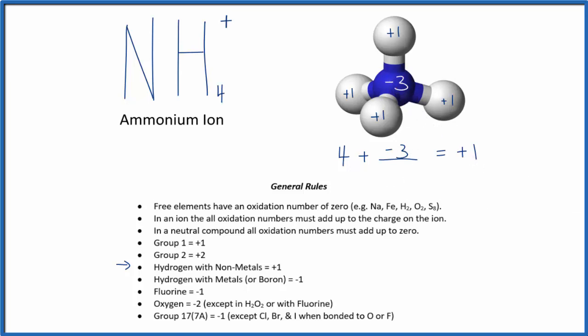To recap, we know from these rules that hydrogen will have an oxidation number of +1. So all these hydrogens and the central nitrogen, if we add all that together, it has to equal +1, which is the charge on the overall ion.